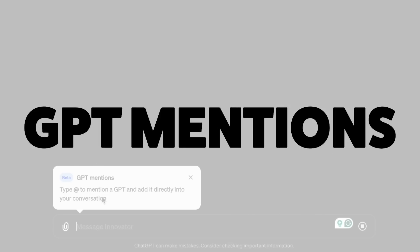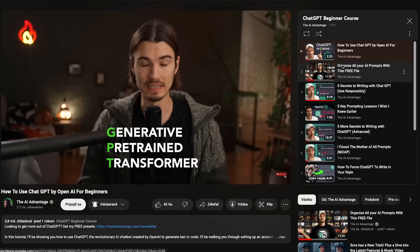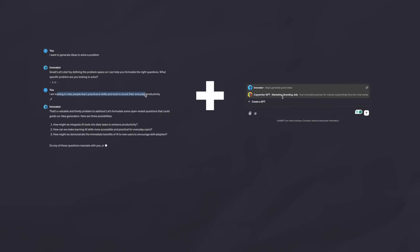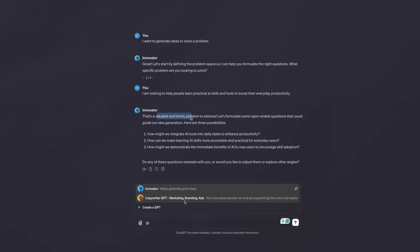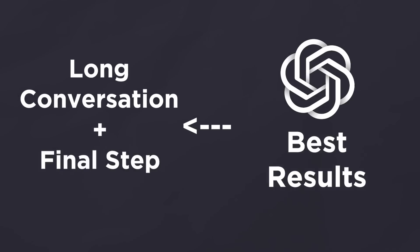First up, let's talk about the mentions feature. This is very simply explained if you already understand GPTs. Basically, the mentions feature allows you to have one conversation and then bring a GPT with a different set of instructions and unique capabilities into that conversation seamlessly. This really easily allows you to mix and match different capabilities within one conversation. Some of the best results from ChatGPT come from giving detailed context in a longer conversation and then performing your final step.